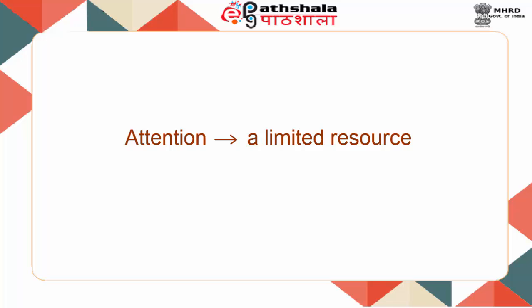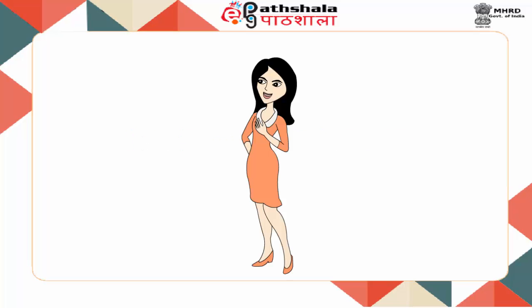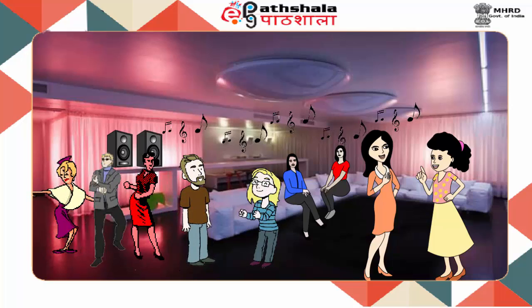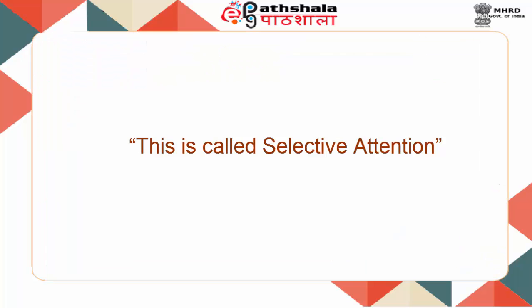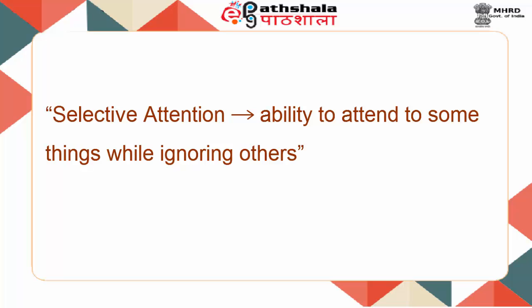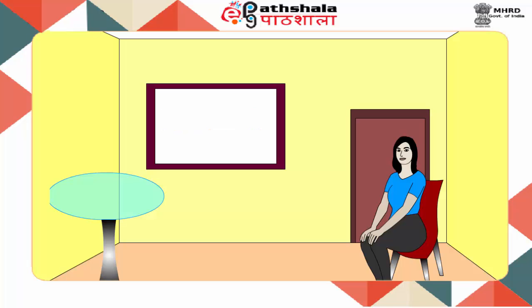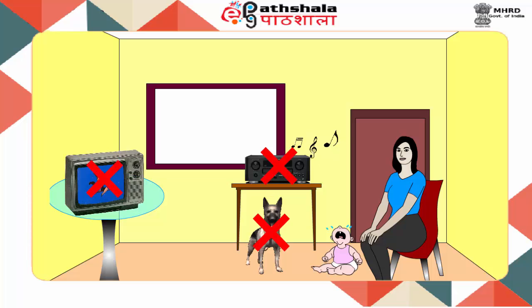To illustrate further the process of attention, let us have a look at Michelle. Michelle is at a very large and noisy party and can still attend to her friend talking to her. So selective attention in simple terms can be defined as the ability to attend to some things while ignoring others. As seen in the previous example of Jane, humans have limited information processing capacity and the theories of selective attention are based on this idea.